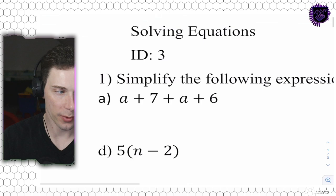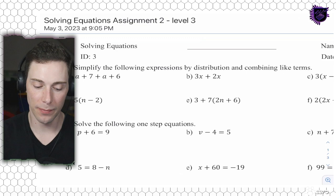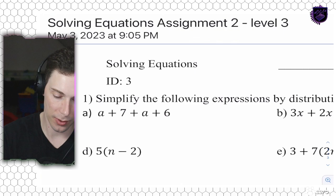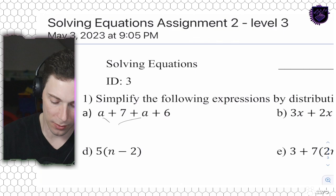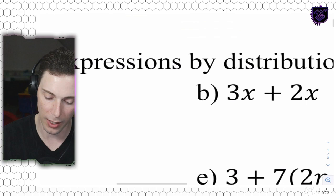Question 1a says simplify the following. The first one is a plus seven plus a plus six. We're going to combine our a's - that's going to be 2a - and then plus 13. That's our answer. That's simplified. We have a and a, and then seven and six coming together, combining our like terms.